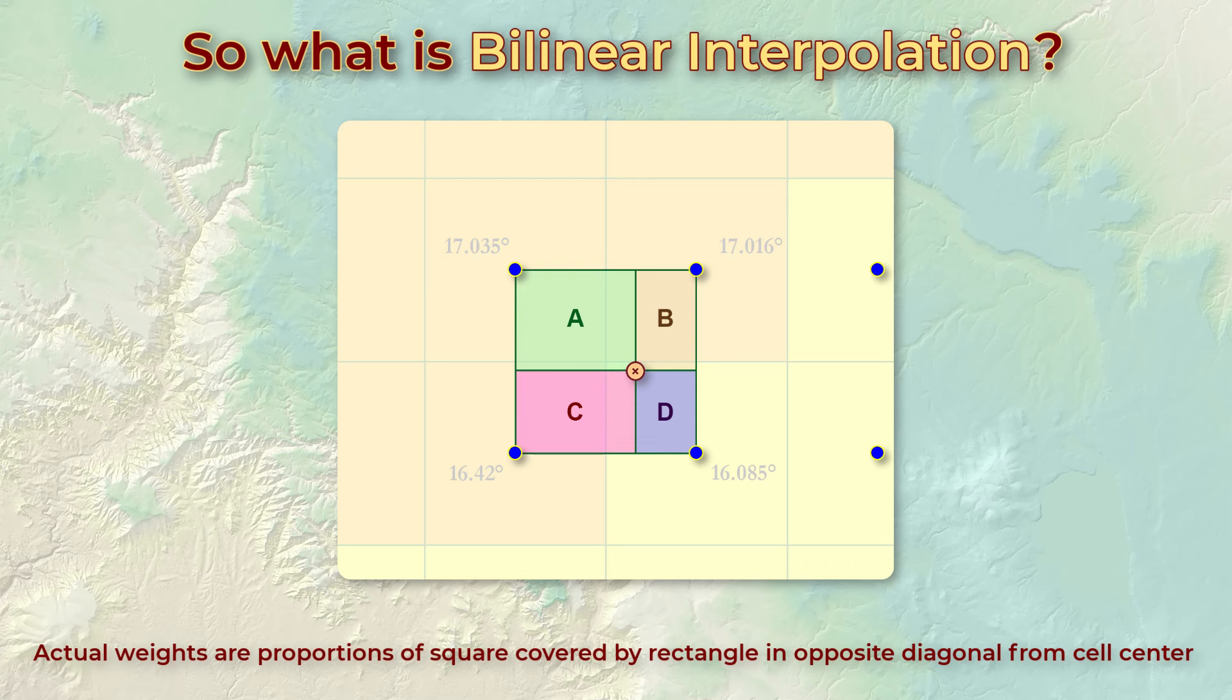So the southeast slope value of 16.085 would be weighted by the proportion of the square covered by the northwest rectangle A. The southwest corner of 16.42 would be weighted by rectangle B.